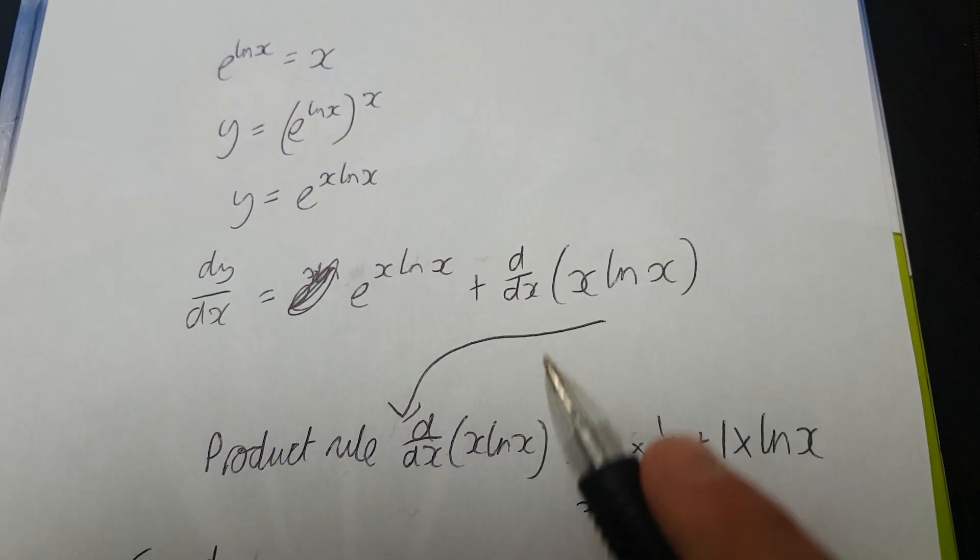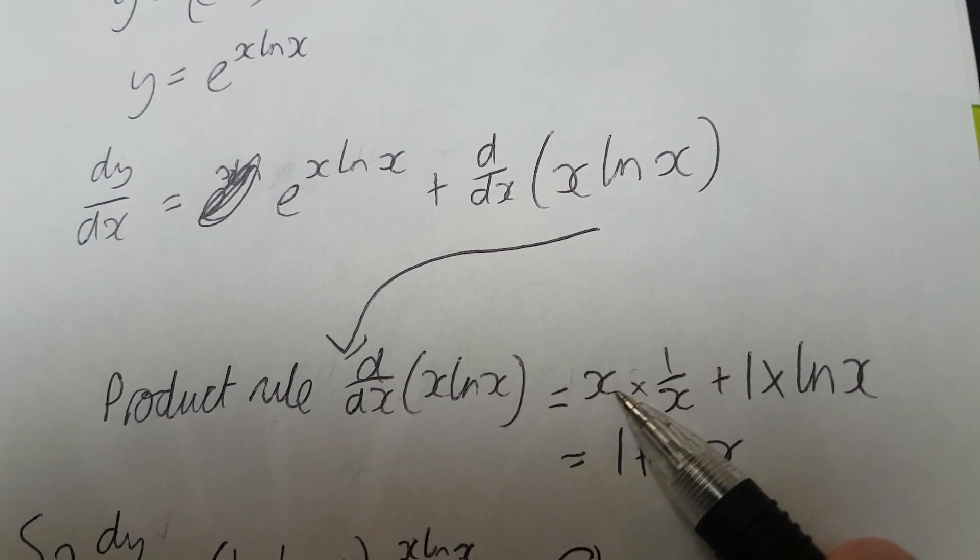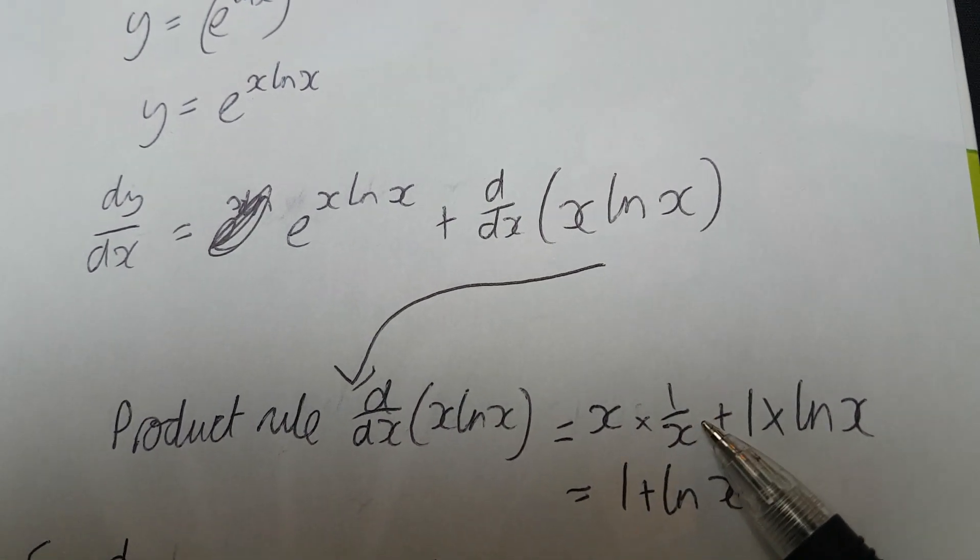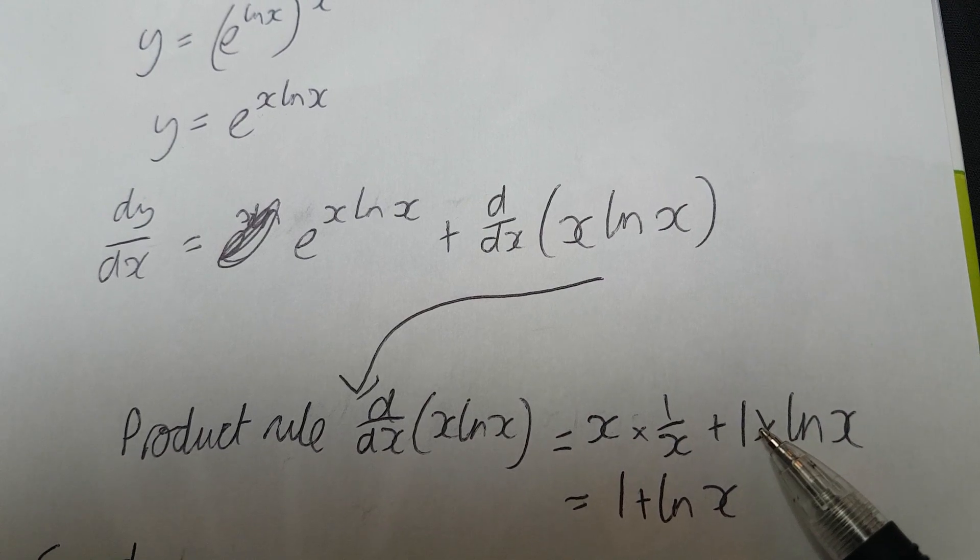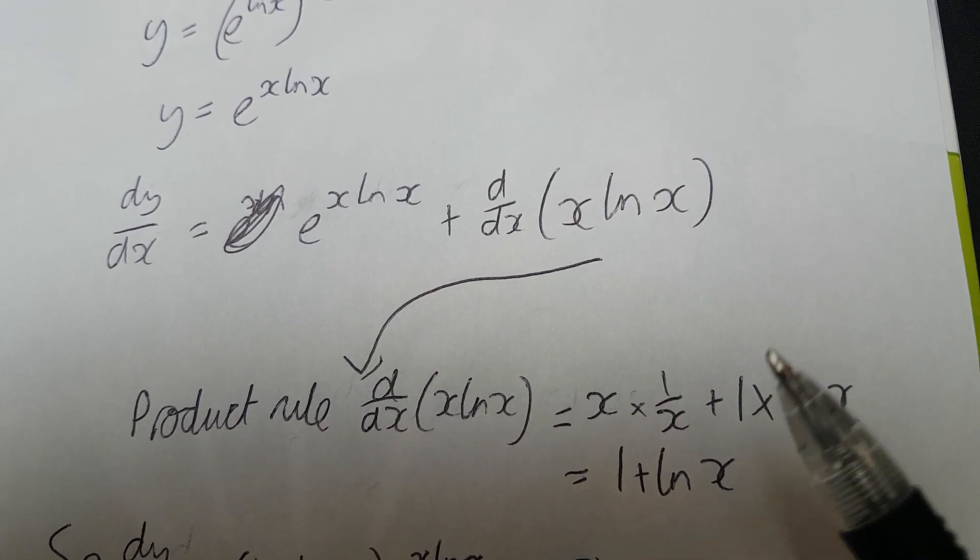So, now we just want to focus on this, which is a nice simple product rule. And so we've got x times the derivative of natural log x, which is 1 over x, plus natural log x times the derivative of x, which is just 1. And so these x's cancel, and you get 1 plus natural log x.